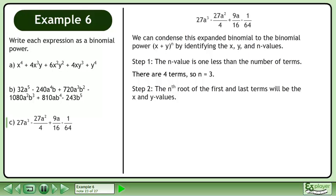In step 2, the nth root of the first and last terms will be the x and y values. The cube root of 27 times a cubed is 3a, and the cube root of negative 1 over 64 is negative 1 over 4.